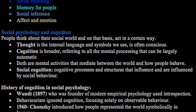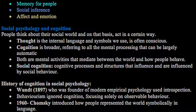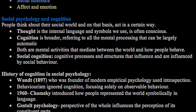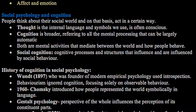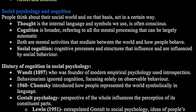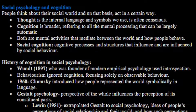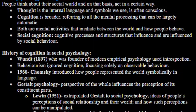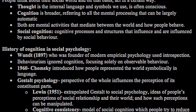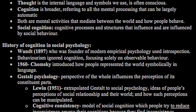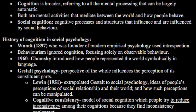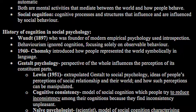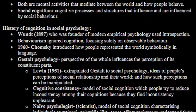Behaviourism ignored cognition and focused solely on observable behaviour. In 1960, Chomsky introduced how people represented the world symbolically in language. Then you have Gestalt psychology, which is the perspective of the whole and how that influences the perception of its constituent parts. Lewin in 1951 extrapolated Gestalt to social psychology, in which ideas of people's perceptions of social relationships in their world could be manipulated — for example, by seeing individuals as having certain characteristics when probably there are none, or highlighting certain whole personalities of people where there are also probably none.